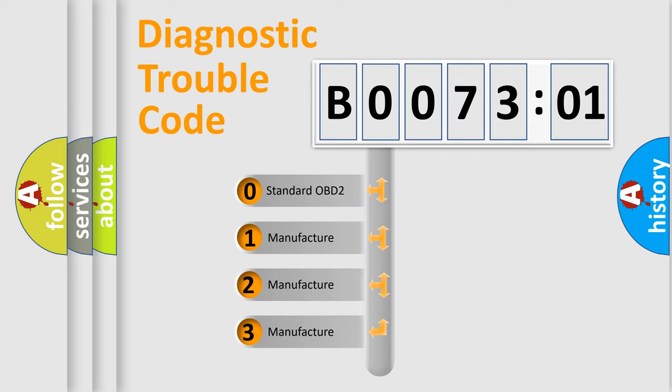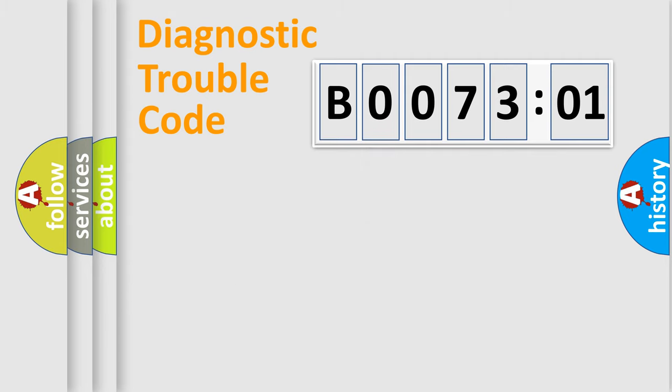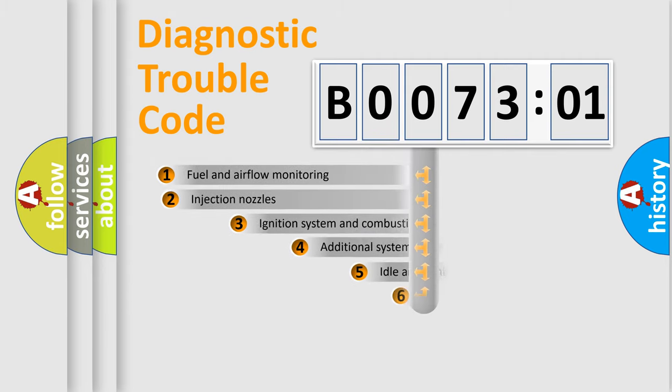If the second character is expressed as zero, it is a standardized error. In the case of numbers 1, 2, or 3, it is a more specific expression of the car-specific error.